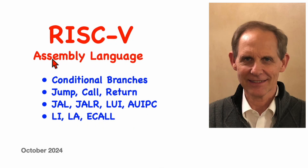Welcome to another video in a series describing the RISC-V core and RISC-V assembly language. In previous videos I discussed the registers and described the instructions that manipulate data, including the various ALU instructions as well as the load and store instructions. In this video I'll be covering the instructions that change the flow of control, including conditional test and branch instructions and the jump, call, and return instructions.